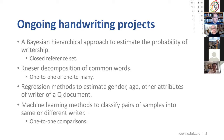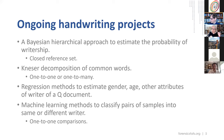These are some of the ongoing handwriting projects at CSAFE. The first and oldest is the Bayesian hierarchical approach to estimating probability of writership — the work that Amy Crawford and Nick Berry developed while working in CSAFE; it's the most mature of the projects. Given a question writing sample and a reference set of potential writers, we estimate the probability that each one in that particular set was the author of that question document.